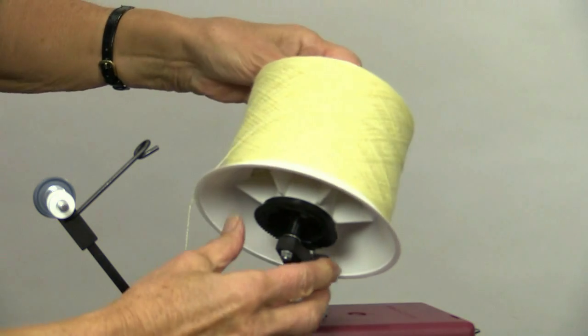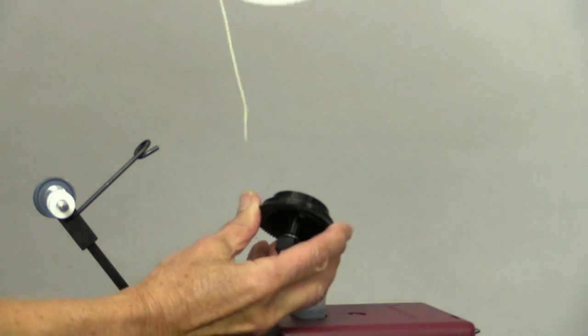To remove the bobbin, hold the gear while you release the bobbin.